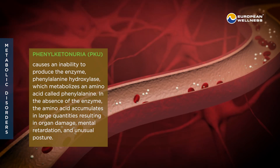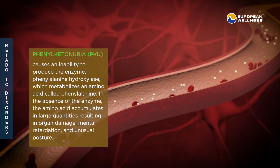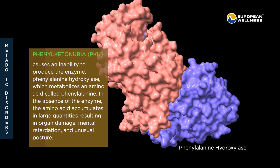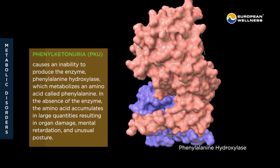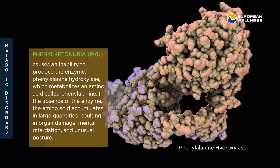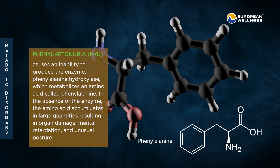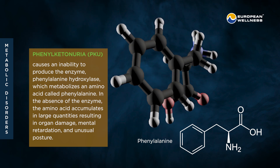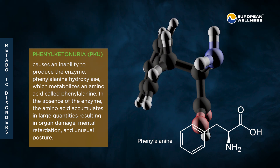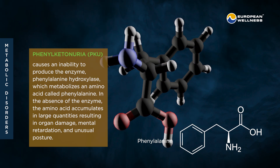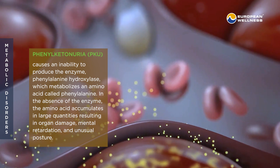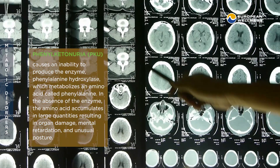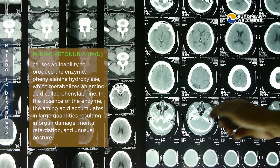Phenylketonuria, or PKU, causes an inability to produce the enzyme phenylalanine hydroxylase, which metabolizes the amino acid called phenylalanine. In the absence of the enzyme, the amino acid accumulates in large quantities, resulting in organ damage, mental retardation, and unusual posture.